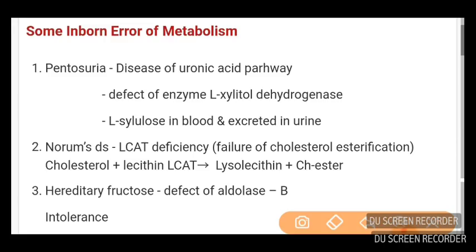Starting with pentosuria: it is a disease of the uronic acid pathway with a defect of the enzyme L-Xylitol dehydrogenase. L-Xylulose is found in blood and excreted in urine. Both the enzyme defect and the excretion or presence in blood and urine can be asked as separate questions.